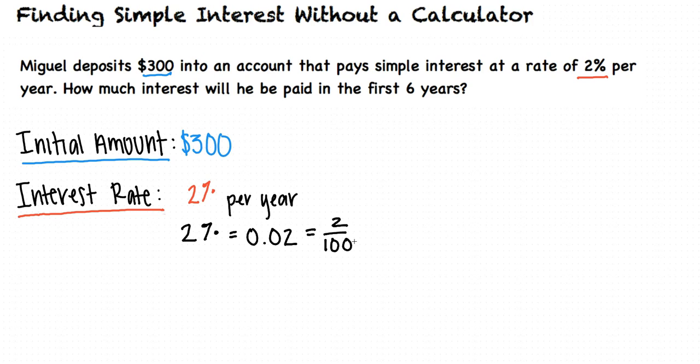We can find out what 2% of 300 is by multiplying 300 by 2 over 100. This gives us an answer of 6.